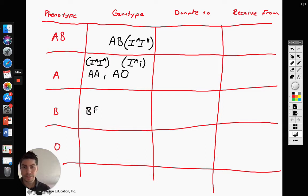B, you could be BB or BO. So it could be IB IB, IB lowercase I. And then O, you just have two recessive alleles, or your book would represent it I I.